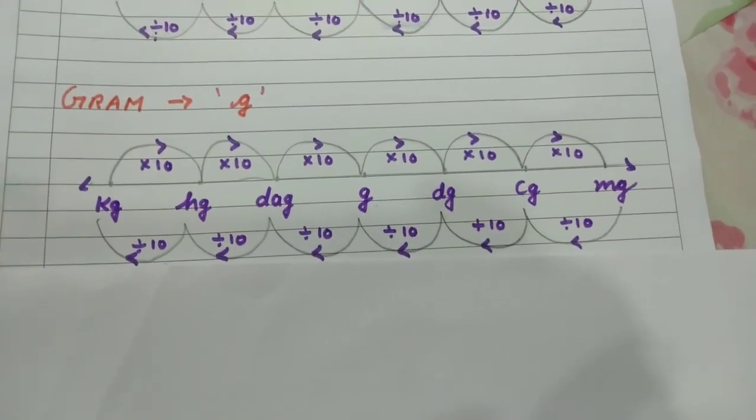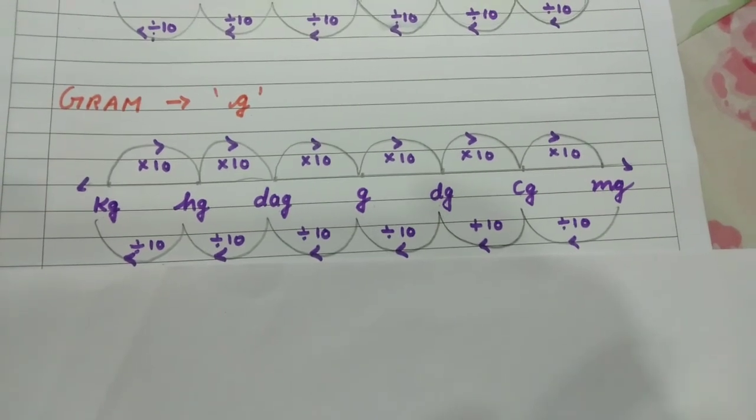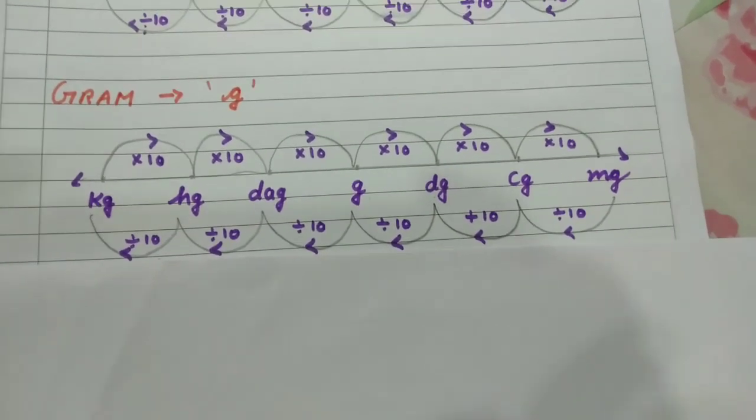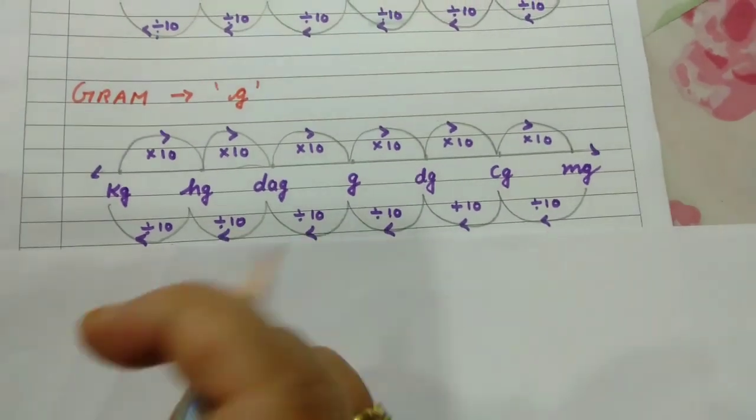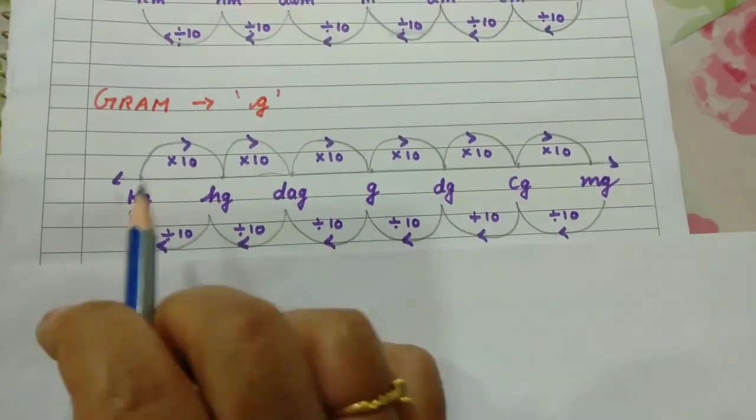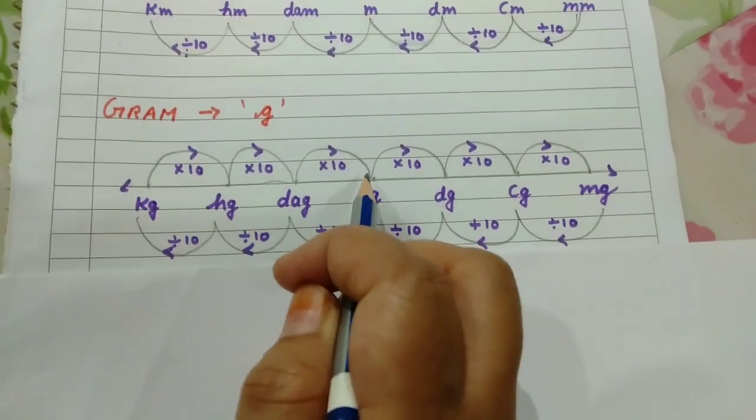Yes, next is gram. Gram is represented in the form of small g. The same rule you have to follow in grams too. Whenever you have to convert a bigger unit into a smaller unit, you multiply by 10.